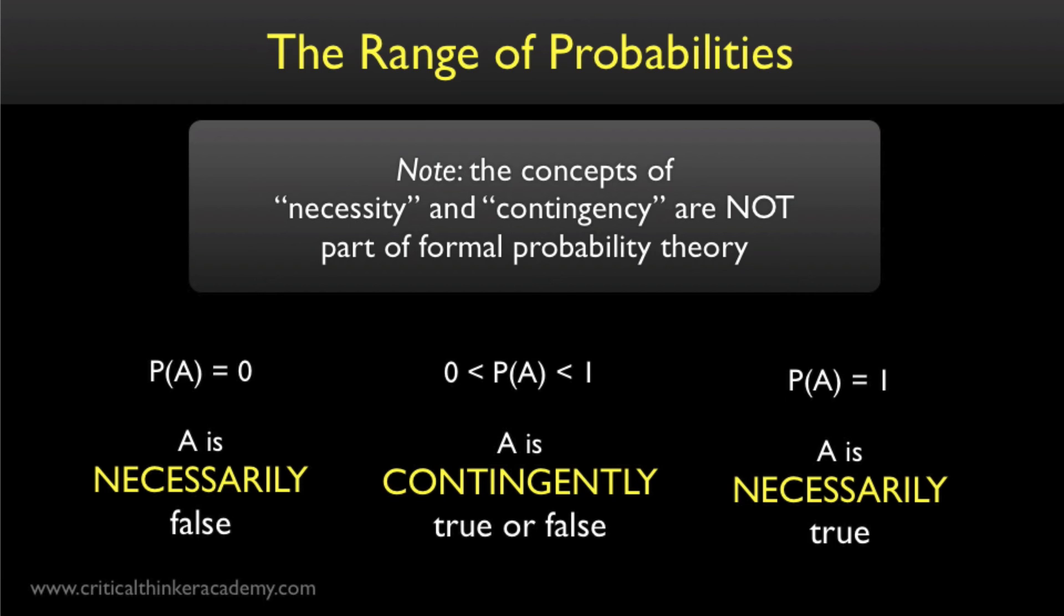Now, having just said this, I think it's important to point out that these concepts of necessary and contingent propositions and events are not part of formal probability theory. They're really a part of a broader philosophical framework for interpreting the world. And they're separable, in principle, from probability theory.